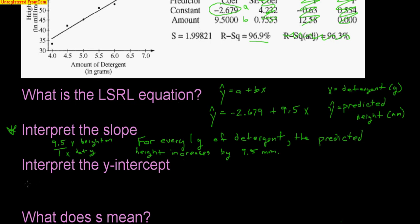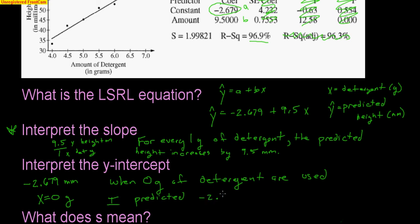What about the y-intercept? The y-intercept was the A value, negative 2.679. A y-intercept tells me what happens when x is 0. So x would be 0 grams of detergent. I'm expected to get negative 2.679 millimeters of height.